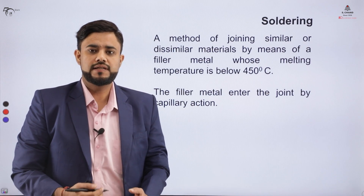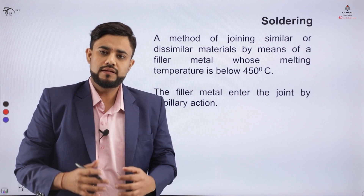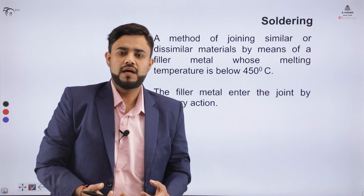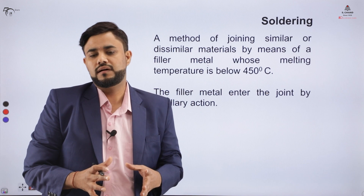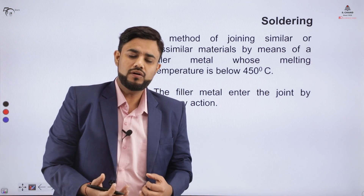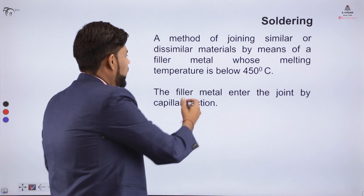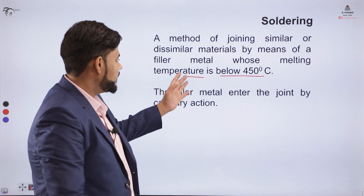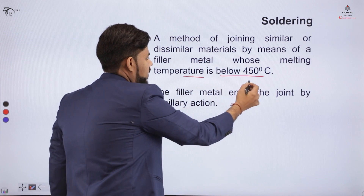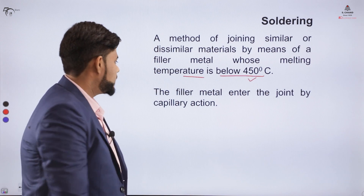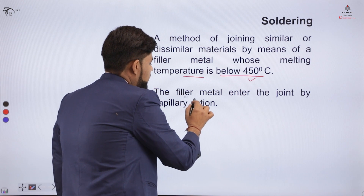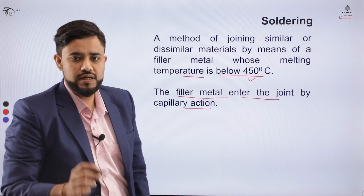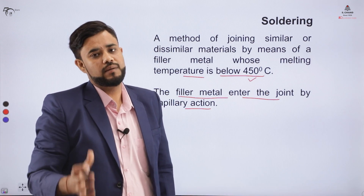Let us understand the basic concept behind the soldering process. In soldering, we can join similar or dissimilar metals. The key feature is that the filler wire melts, but this melting occurs below 450 degrees Celsius — meaning the filler wire has a melting temperature of less than 450 degrees Celsius. The concept is similar to brazing: the filler material enters the joint with the help of capillary action.